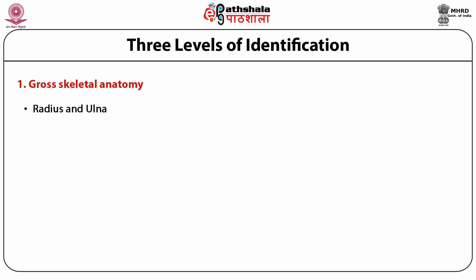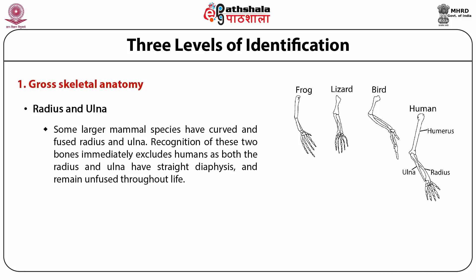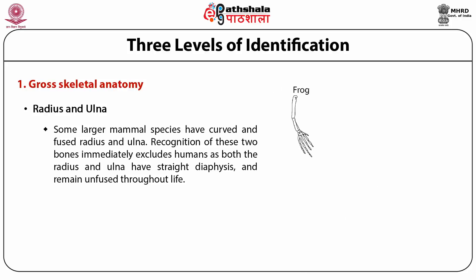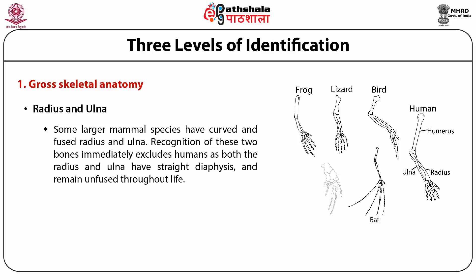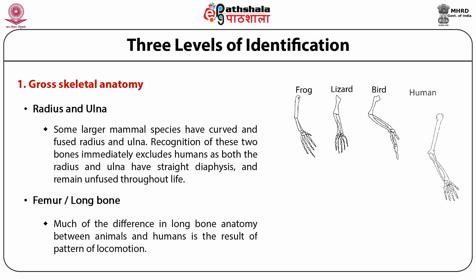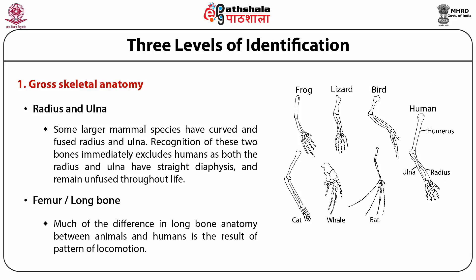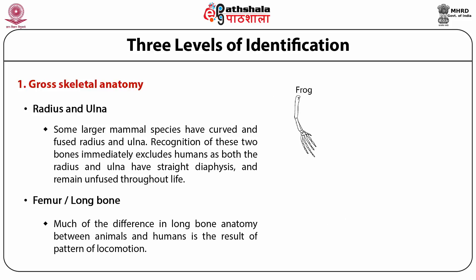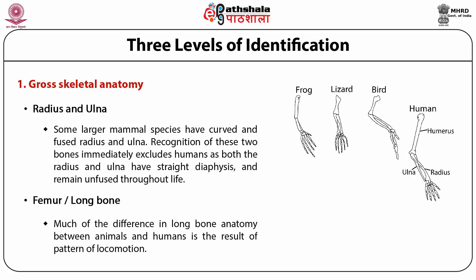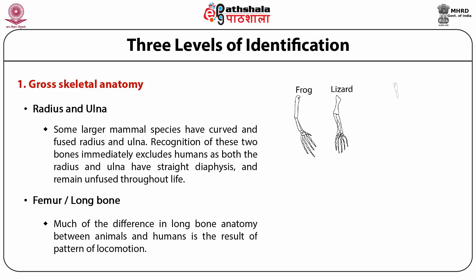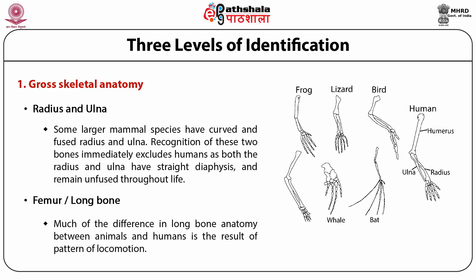Some larger mammal species have curved and fused radius and ulna. Recognition of these two bones immediately excludes humans, as both the human radius and ulna have straight diaphyses and remain unfused throughout life. Much of the difference in long bone anatomy between animals and humans results from patterns of locomotion. Juvenile human long bones may have unfused, separate epiphyses, whereas small adult non-human animal bones will display fused epiphyses — so non-human bones can be differentiated from juvenile humans by examining bone maturity.